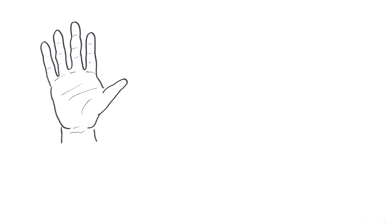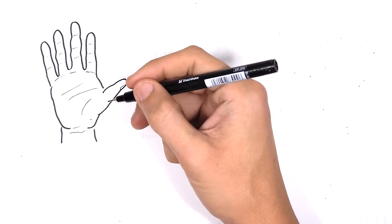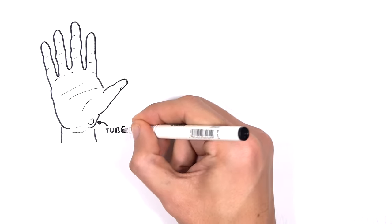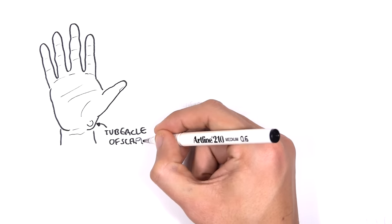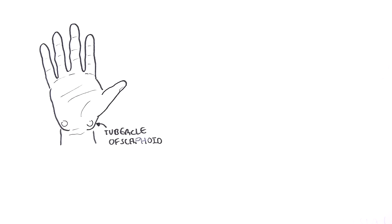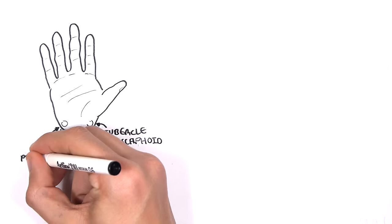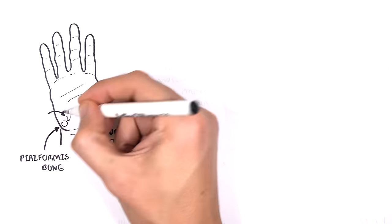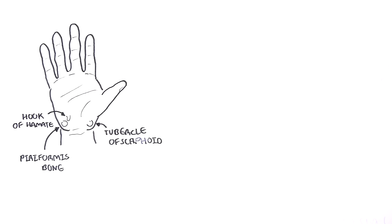We'll begin by focusing on the right hand. Here is the right hand, looking at it from a palmar view. The surface anatomy here — you can actually feel your scaphoid bone, the tubercle of your scaphoid bone, and there's also the pisiform bone you can feel, as well as above it the hook of hamate.